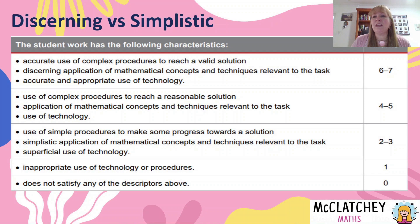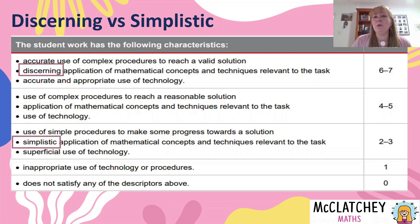Let's look at our instrument specific marking guide, also known as the ISMG, and we can see the different marks allocated to different parts. In this video, we are focused on the middle dot point — discerning application of mathematical concepts and techniques relevant to the task. If we can hit that box, we can get a mark for solve in the range of six to seven.